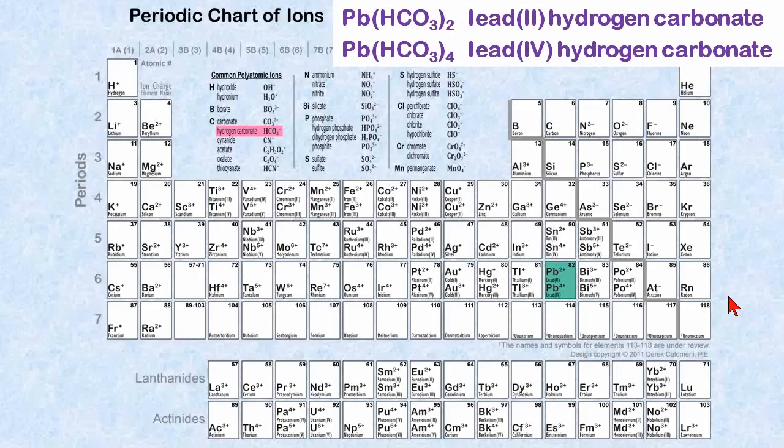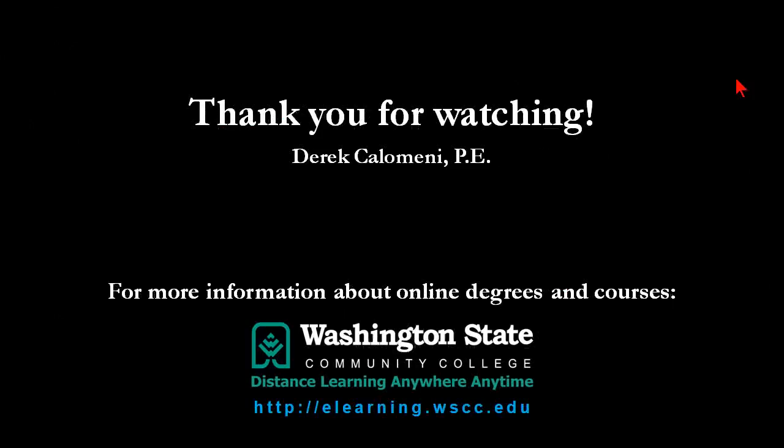Here's one more example using the same variable charge with lead two or four, combining with the polyatomic ion hydrogen carbonate, HCO3 minus. You either have Pb(HCO3)2 or Pb(HCO3)4, which is lead two hydrogen carbonate and lead four hydrogen carbonate. The rules for naming these ionic compounds are in your book and are pretty straightforward. Thank you for watching this screencast.